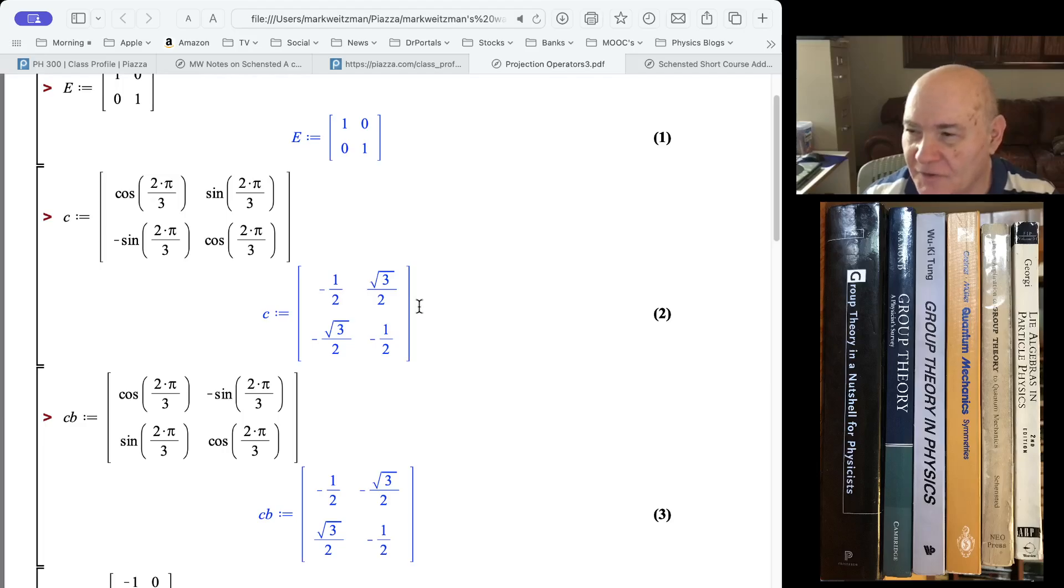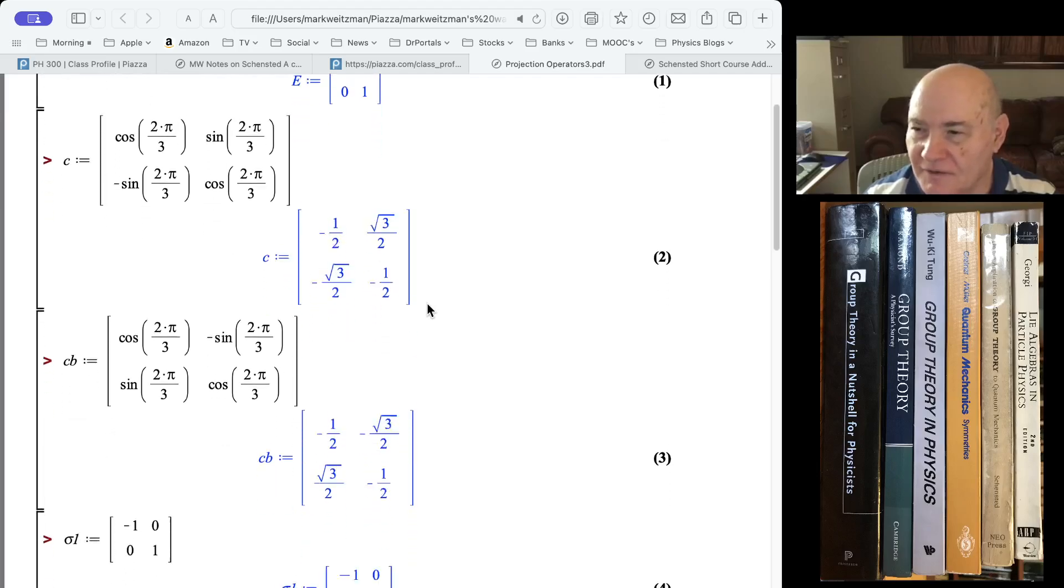And this is the matrix for a 120 degrees clockwise rotation. You can check that all these matrices are orthogonal, and they have determinant 1 for rotations.